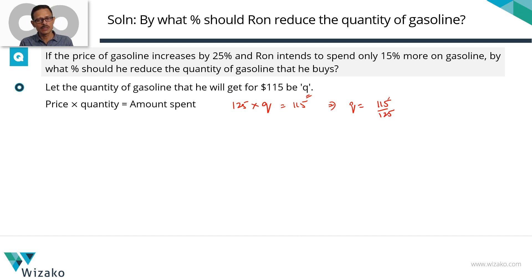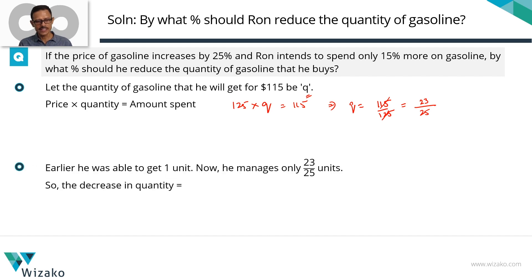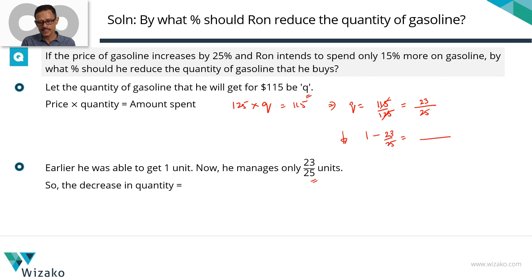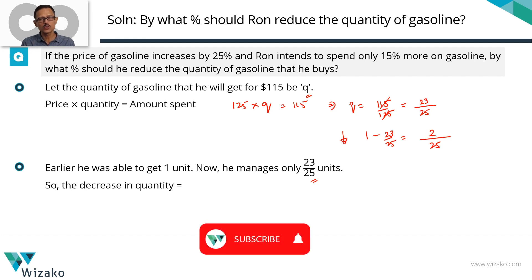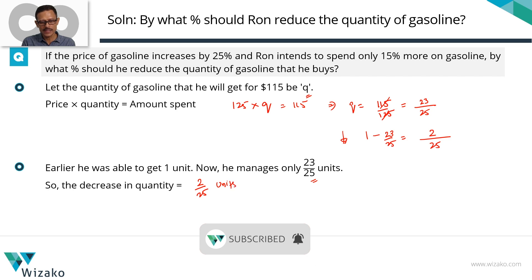Both 115 and 125 are divisible by 5. Dividing both numerator and denominator by 5 gives Q = 23/25. So initially he was able to get 1 unit of gasoline, and now he's managing only 23/25 units. The reduction in quantity is 1 minus 23/25, which — taking 25 as the common denominator — equals 25/25 minus 23/25, giving a decrease of 2/25 units.